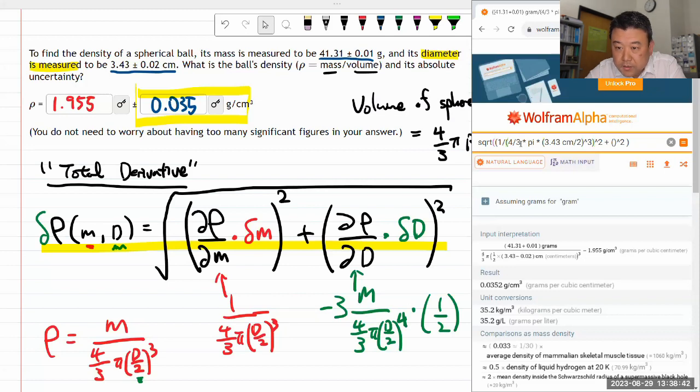Wait, I think I skipped something. I need to close this parenthesis here—that's the derivative multiplied by the uncertainty—and then square the whole thing. That's the first term.